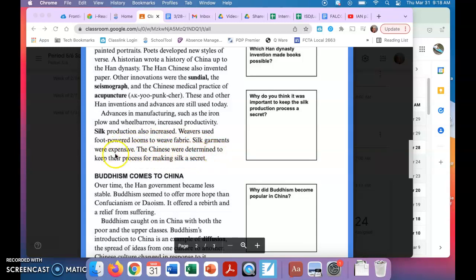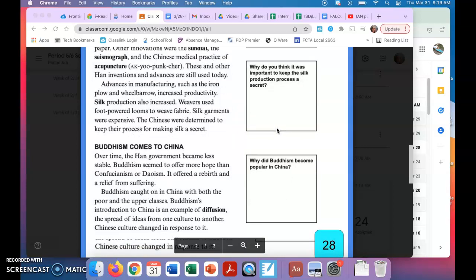The Chinese were determined to keep their process for making silk a secret. So why—it doesn't say it right here—why do you think they would want to keep that silk production process a secret? You have to use some of your inferencing skills there. Think about this.